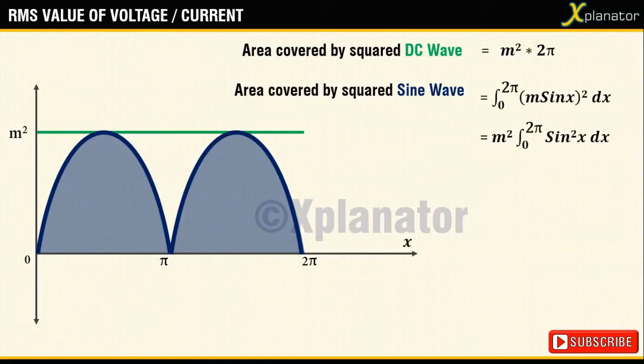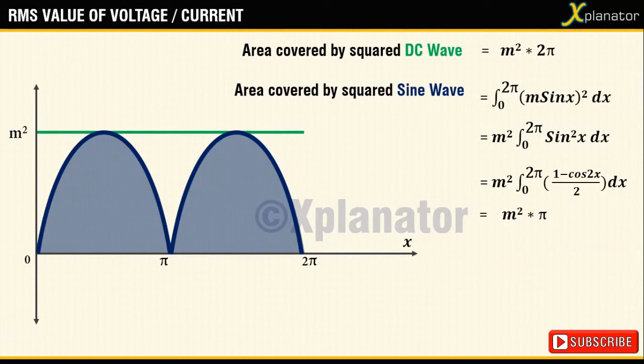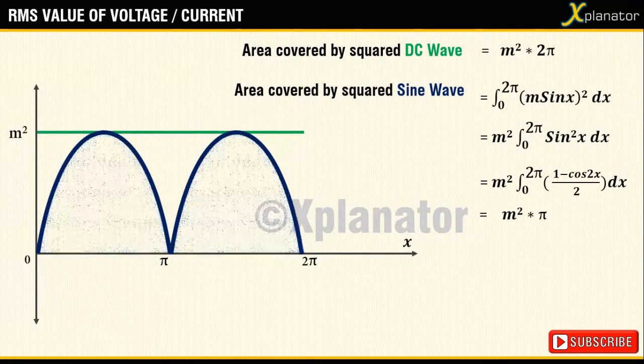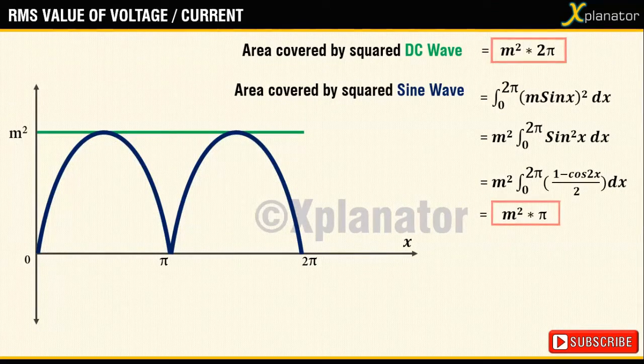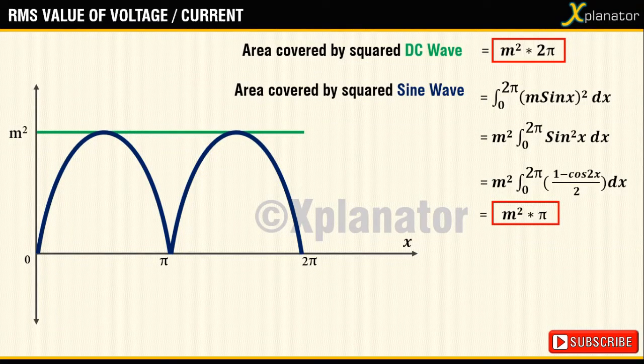If you simplify this, the area will turn out to be m² × π and this is clearly not the same area which is occupied by the DC wave. In fact it is lesser than the actual wave by 2 square units.